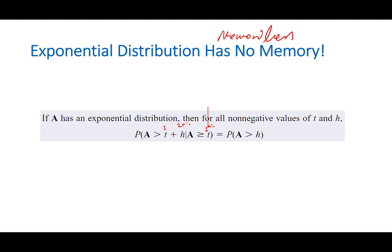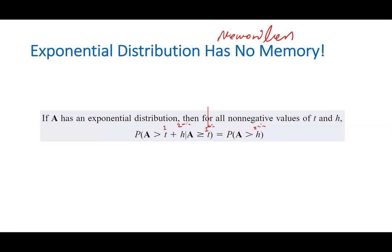That probability is basically the same as asking you: what's the probability that you wait more than two more minutes? The fact that you have waited for one minute has nothing to do with how much you have to wait until you see the next bike — which was the case in the example that we saw, the passing of bikes.